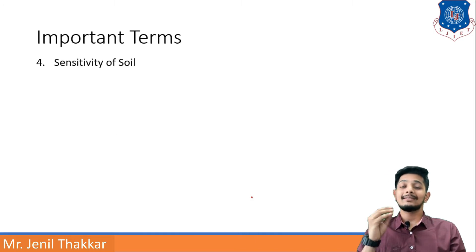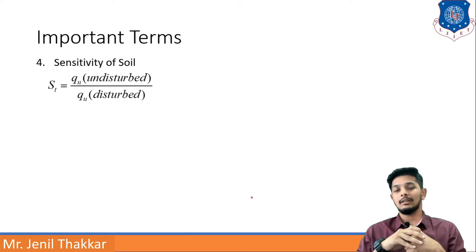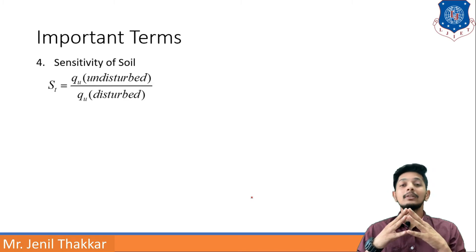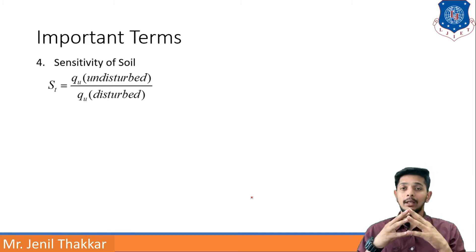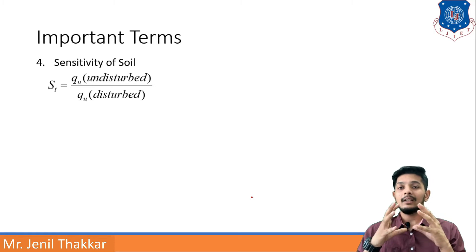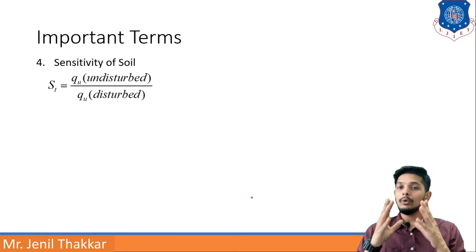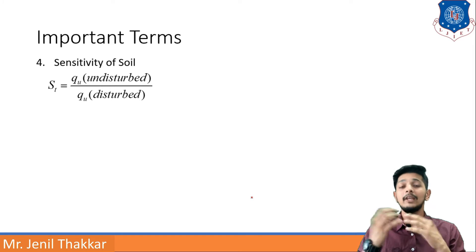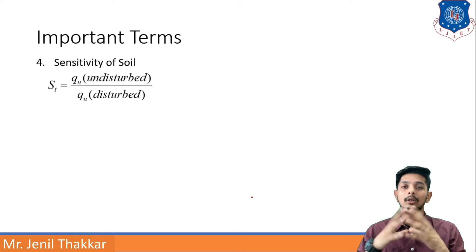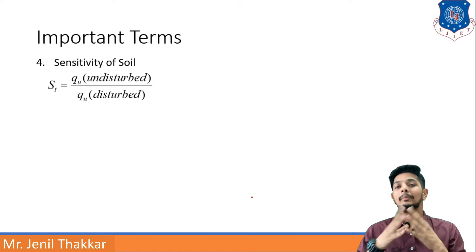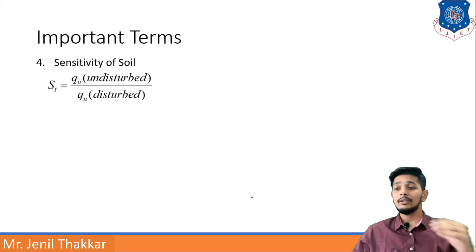Sensitivity ST can be written as QU undisturbed upon QU disturbed. QU is nothing but bearing capacity — the load carrying capacity of any soil. If the soil is undisturbed, we use QU undisturbed in the numerator. A disturbed soil means it has been dug and its structure has been altered, so the bearing capacity of the disturbed soil comes in the denominator.